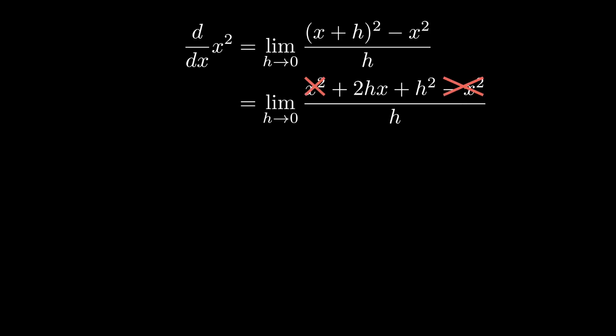After we cancel out the denominator, we're left with the limit of 2x plus h. Of course, the h goes away and we're left with just 2x, which is what we'd hope to find.